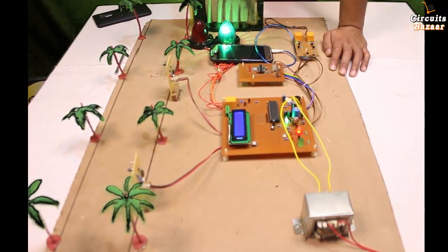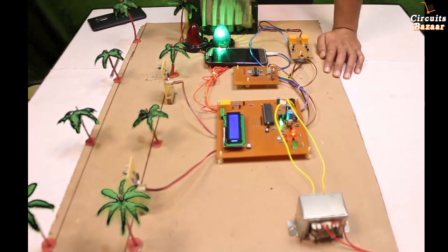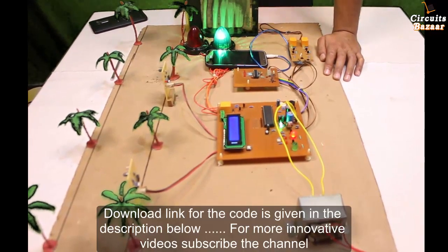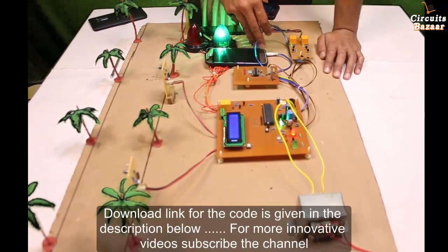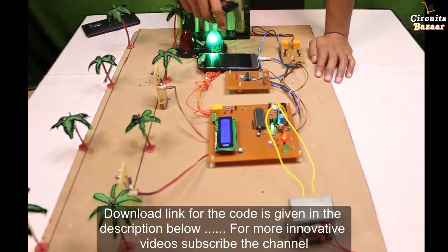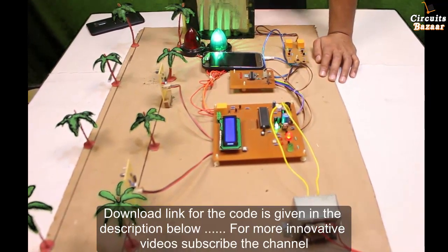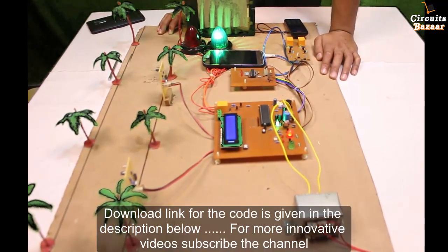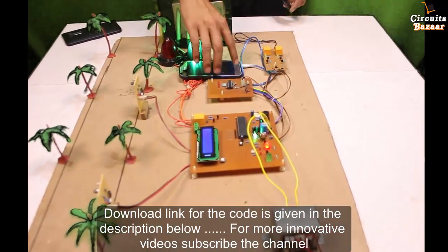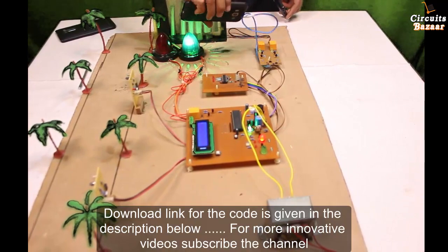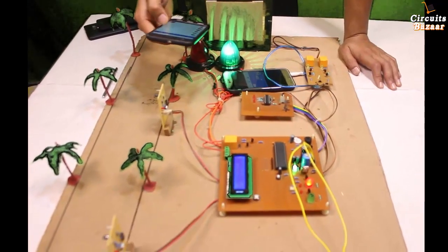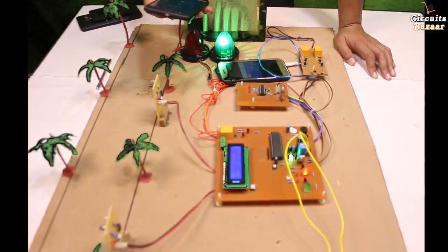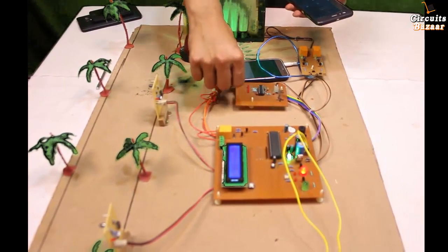The number is 9034259984. There will be a call. But in actual project, you have to receive it automatically. Means there is a setting in every phone. So the call will be received automatically. Now we are going to make a call from this number. Receive the call.